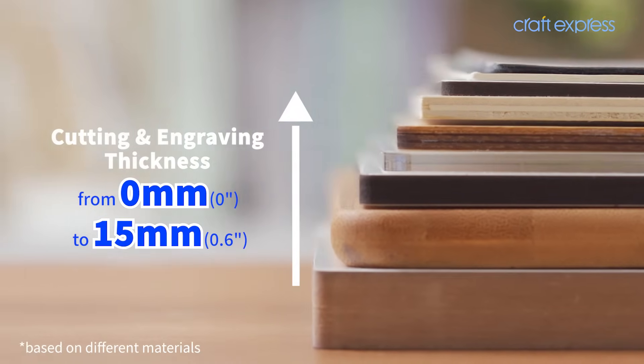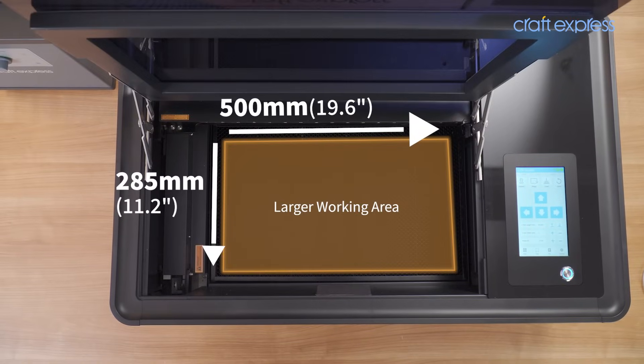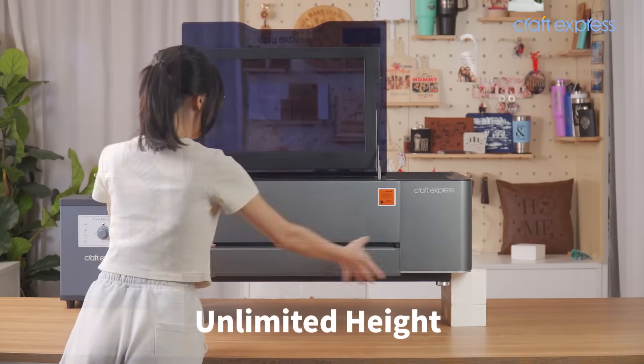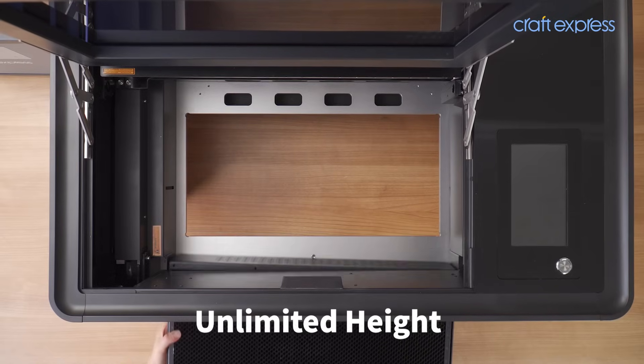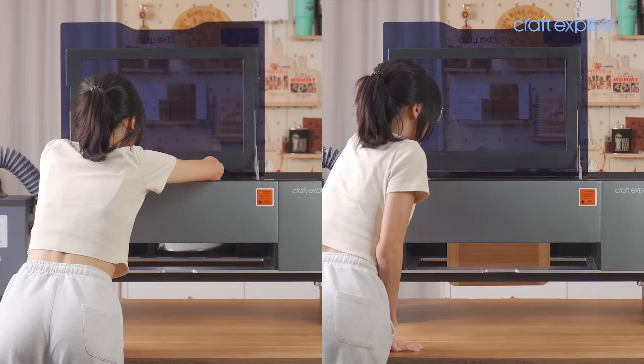Compatible with material thicknesses ranging from zero to 15 millimeters, the engraving machine provides a larger working area. The working table can be pulled out, and the machine can be raised to accommodate higher materials for cutting and engraving. No height limit for your creativity.